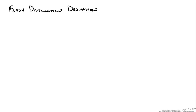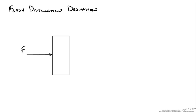So let's start by drawing a flash distillation tank. We have a tank with a feed F, and out of our flash tank we will have a vapor phase which we will call V and a liquid phase which we will call L.